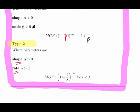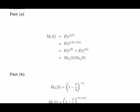So 1 minus t over lambda to the power of minus alpha, that is the moment generating function. We'll come back to that shortly.